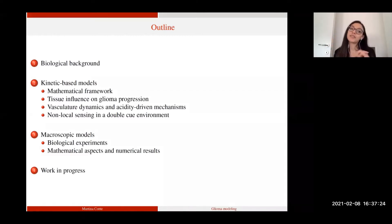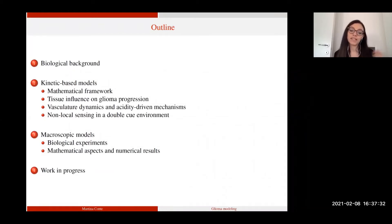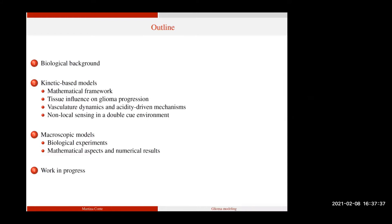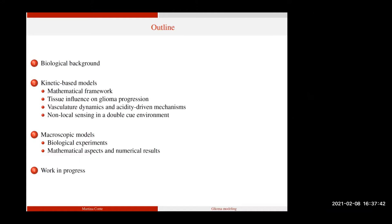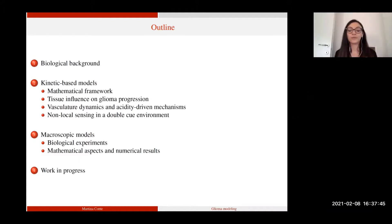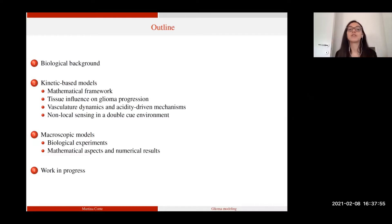One of these extensions was developed with Professor Surulescu from the University of Kaiserslautern, looking at the interaction between tumor cells and brain vasculatures — specifically acidity and hypoxia-driven mechanisms and their effect on glioblastoma progression. A third setting was developed with Nadia Loi and Professor Preziosi from this department, looking at two main mechanisms: the role of cell protrusion expansion in cell migration, and what happens when we have multiple cues influencing cell polarization. So we work on a local framework, analyzing this multiple-cue environment.